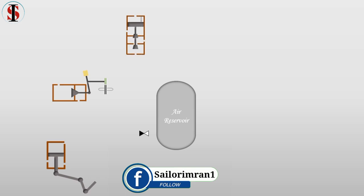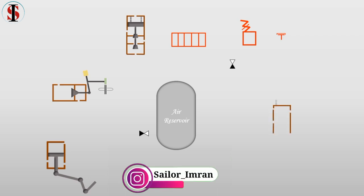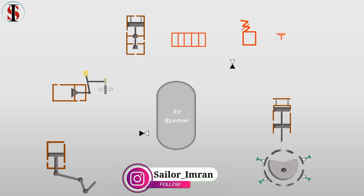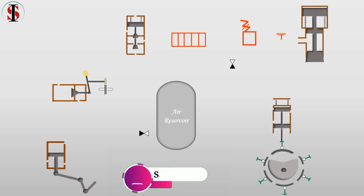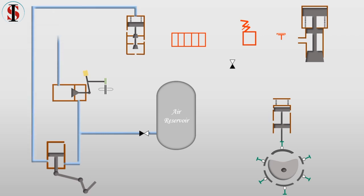The air starting system comprises of an air bottle, pilot valve, turning air interlock, automatic air start valve, flame arrester, bursting disk, air distributor, and cylinder head starting air valve.